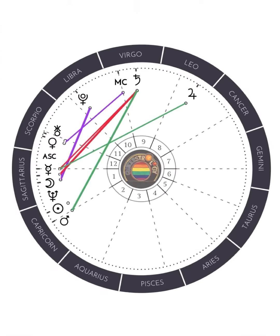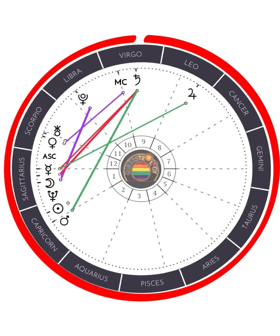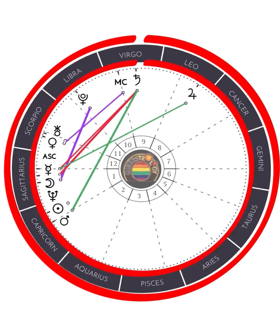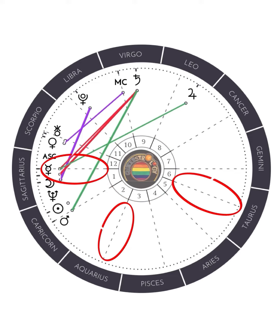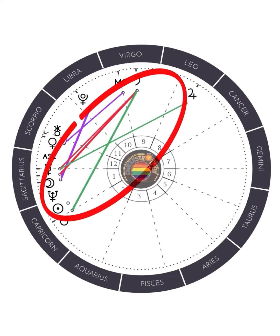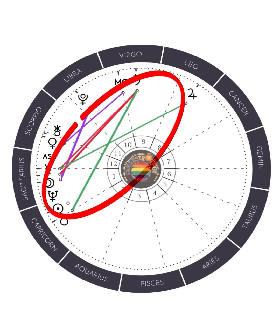Once you have your natal chart, you will notice at the top of the page there's a circle. On the outside of the circle, you'll see the zodiac signs. Then there's numbers in the middle, a bunch of gray dotted lines, and a bunch of colorful lines.